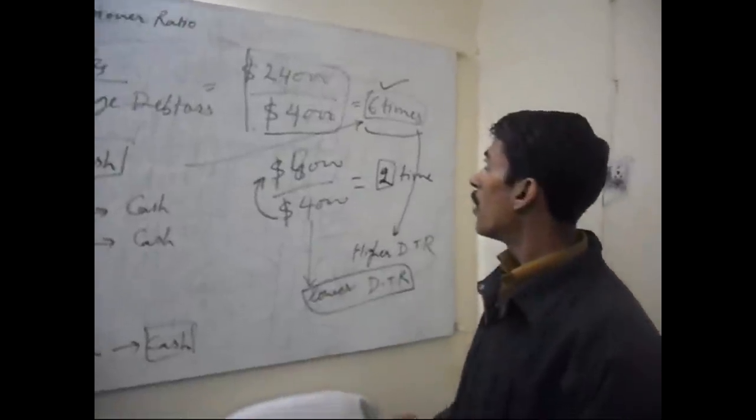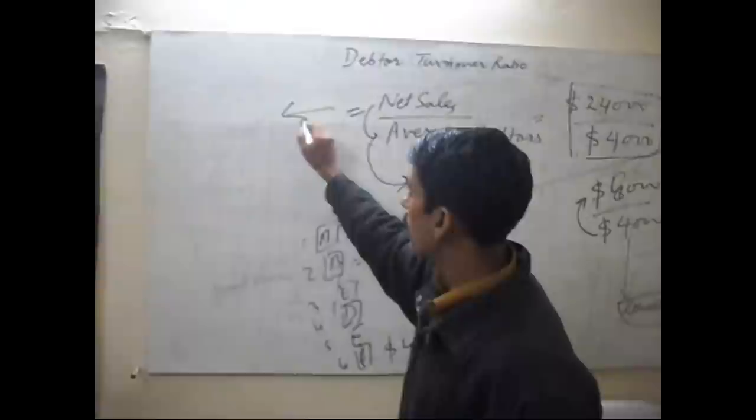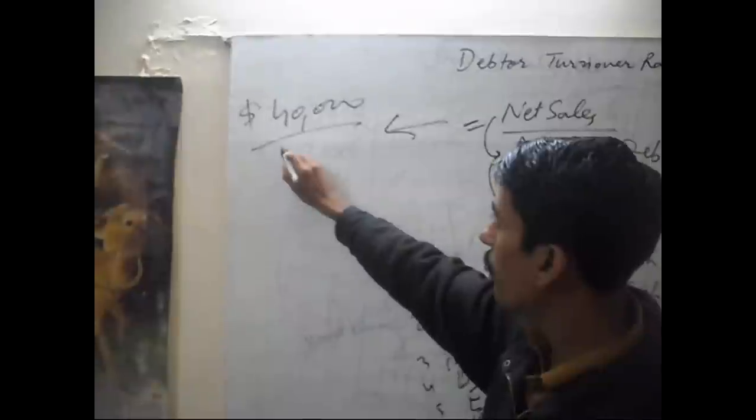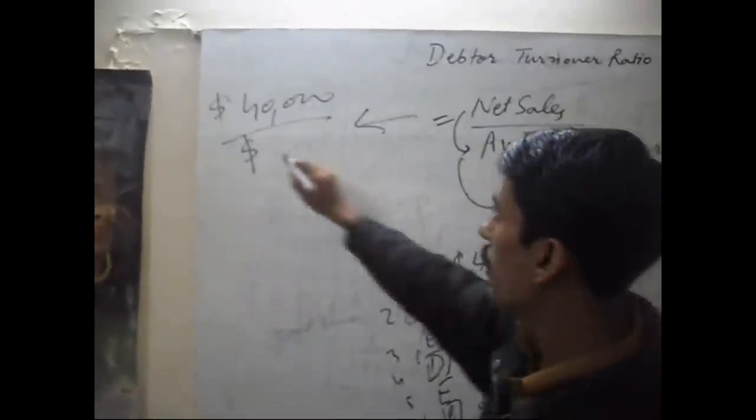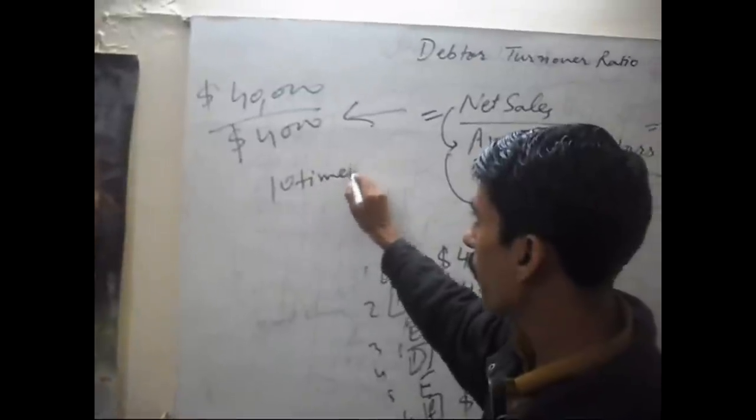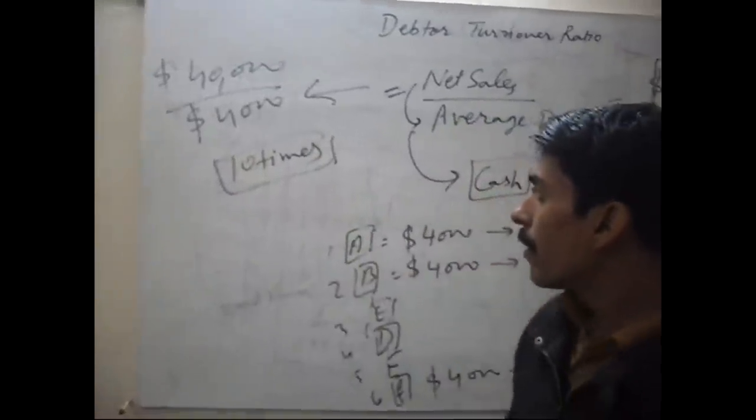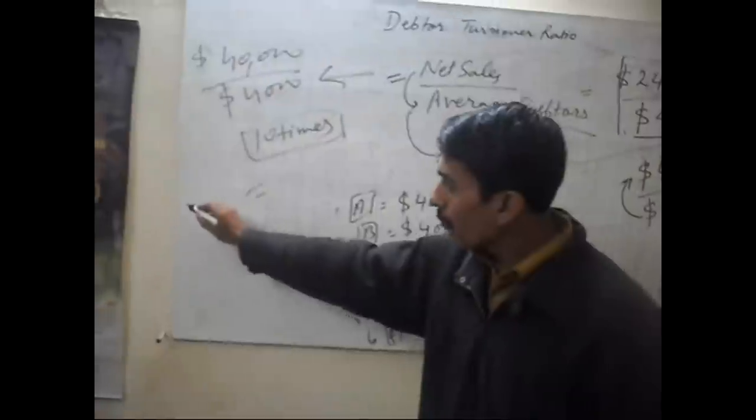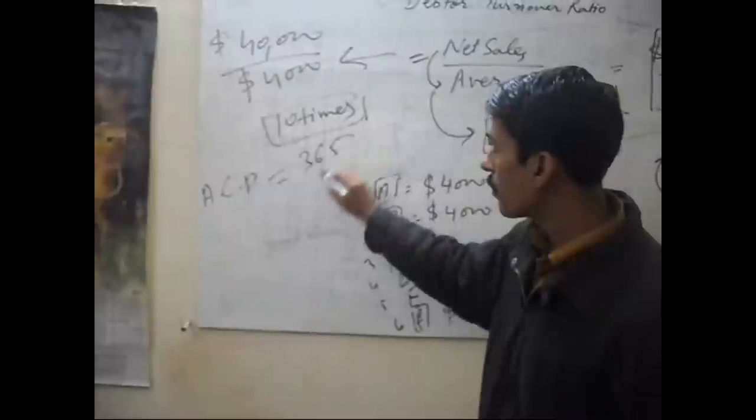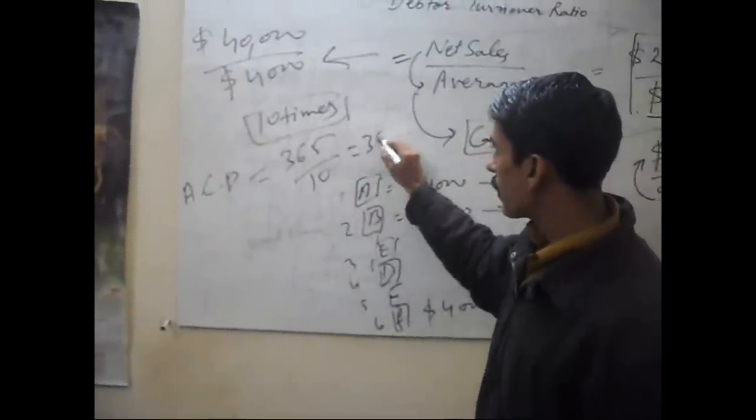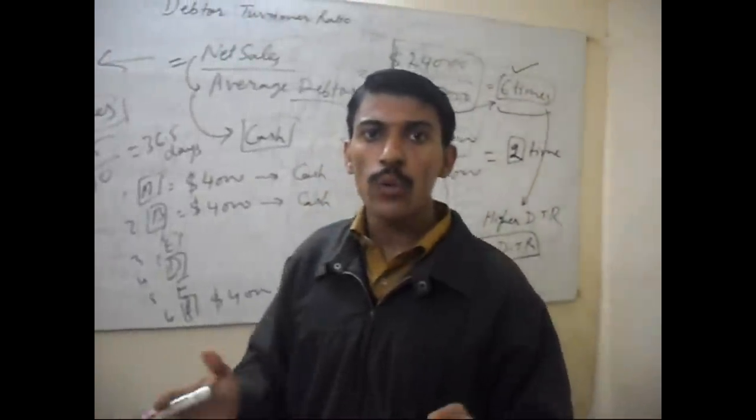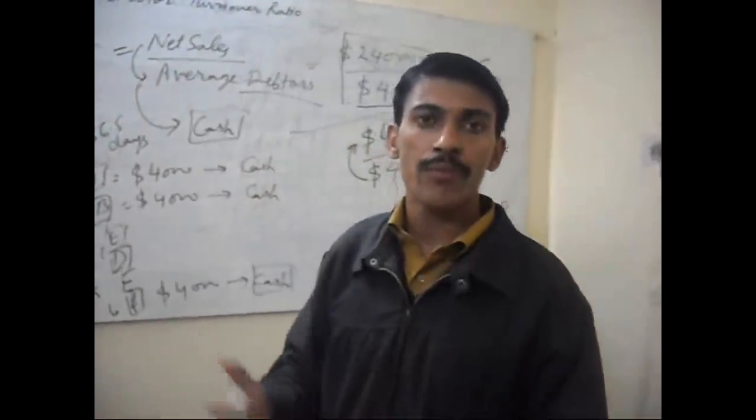If net sale is $40,000 and debtors are $4,000, this is 10 times. The average collection period will be 365 divided by 10, which equals 36.5 days. Within 36.5 days we collect our money from our debtors.